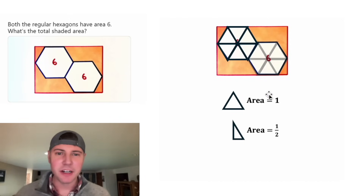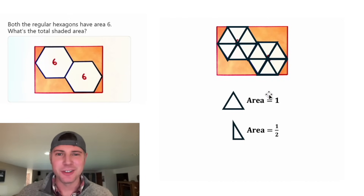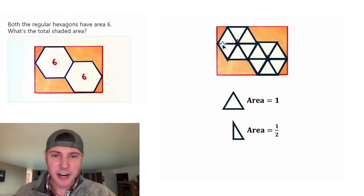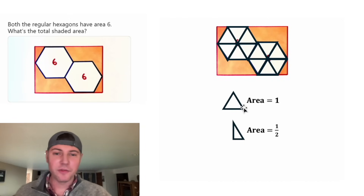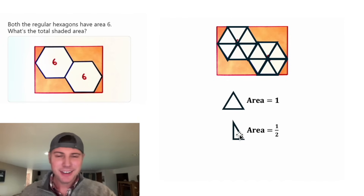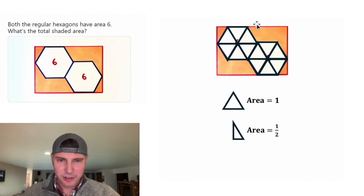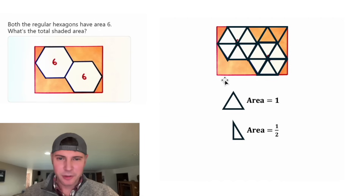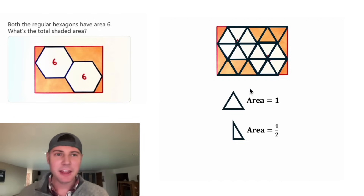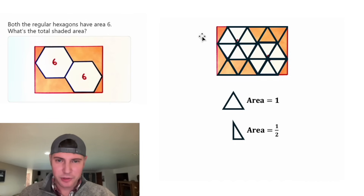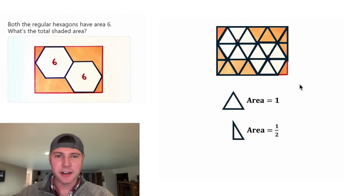Let's take this hexagon and split it up into 6 equilateral triangles too. We can fill in the shaded area with these full and half triangles. There are equilateral triangles here, here, and here, and another one here, one here, and one here. And then we have the 30-60-90 triangles right here, here, here, here, here, and here.